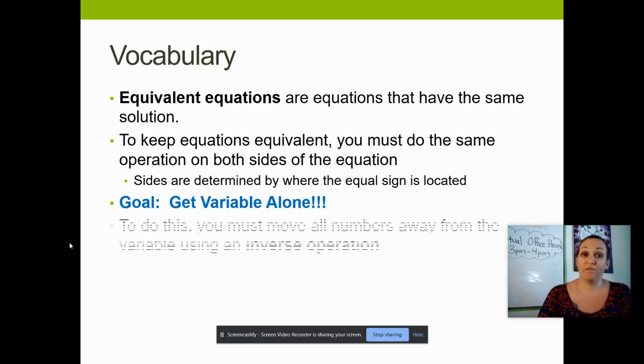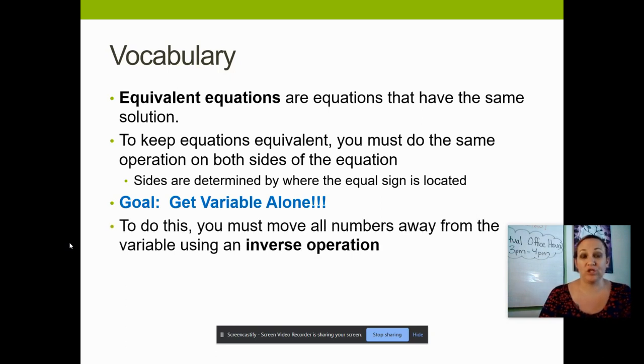To move things away from a variable, you need to use what's called an inverse operation. An inverse operation will allow you to move one number from one side to the other so that your variable can be all by itself.